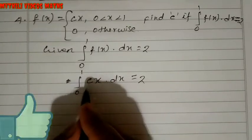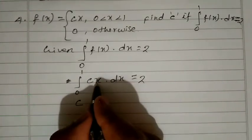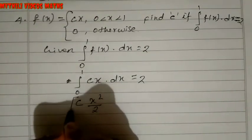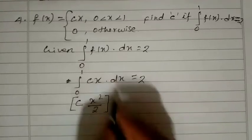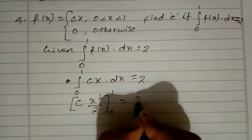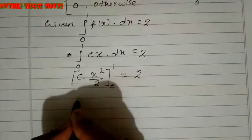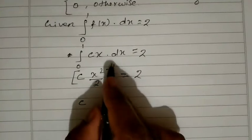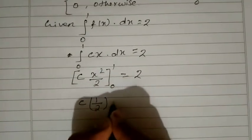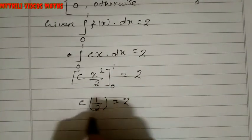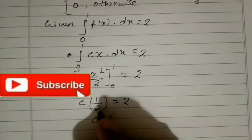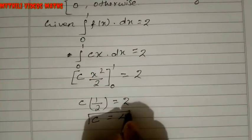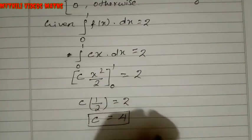Now we integrate. c is a constant, so we keep it as is. Integrating x gives x squared divided by 2, with limits 0 to 1. Applying the limits: c times (1/2 - 0) = 2, so c times 1/2 = 2. By cross multiplication, c = 4. Therefore, the constant c equals 4.